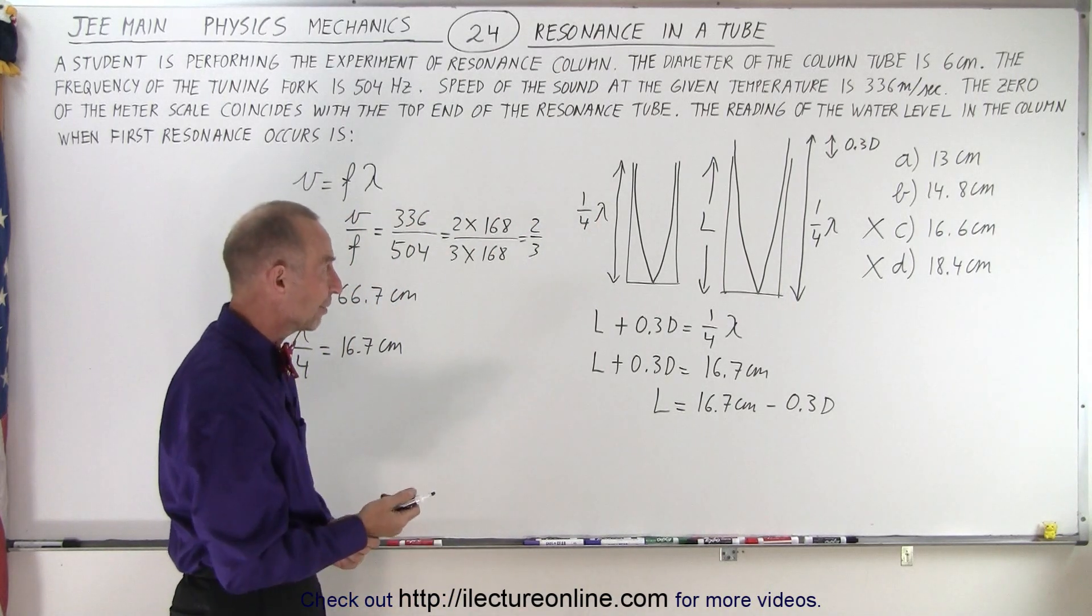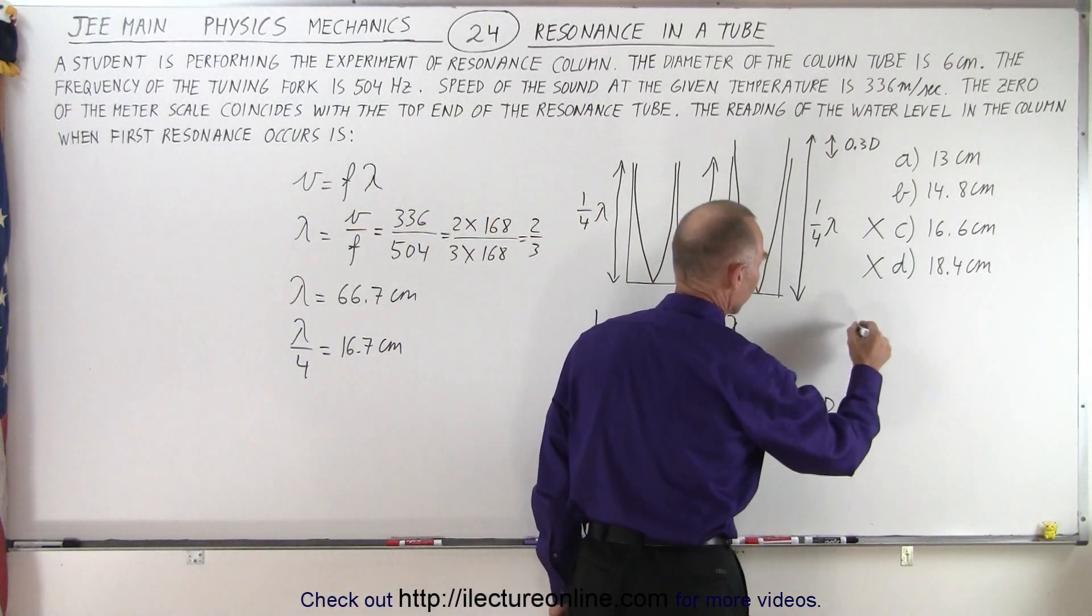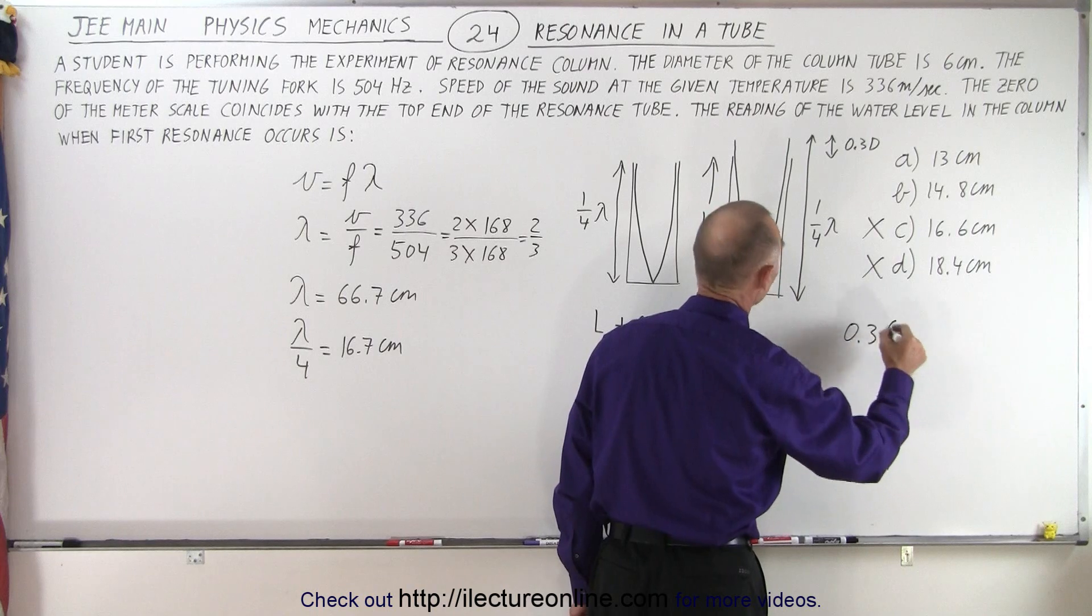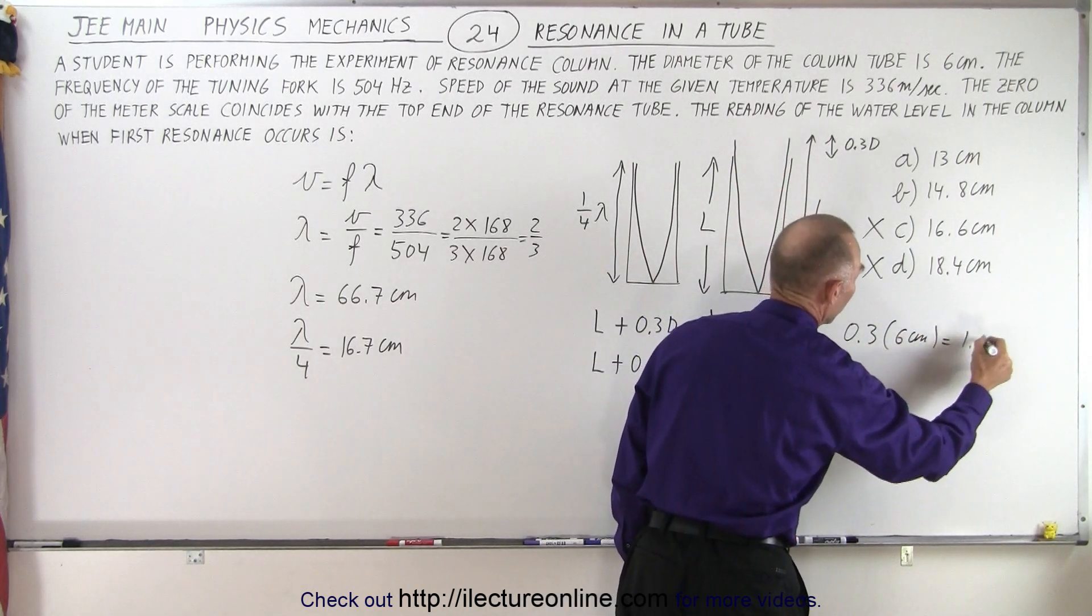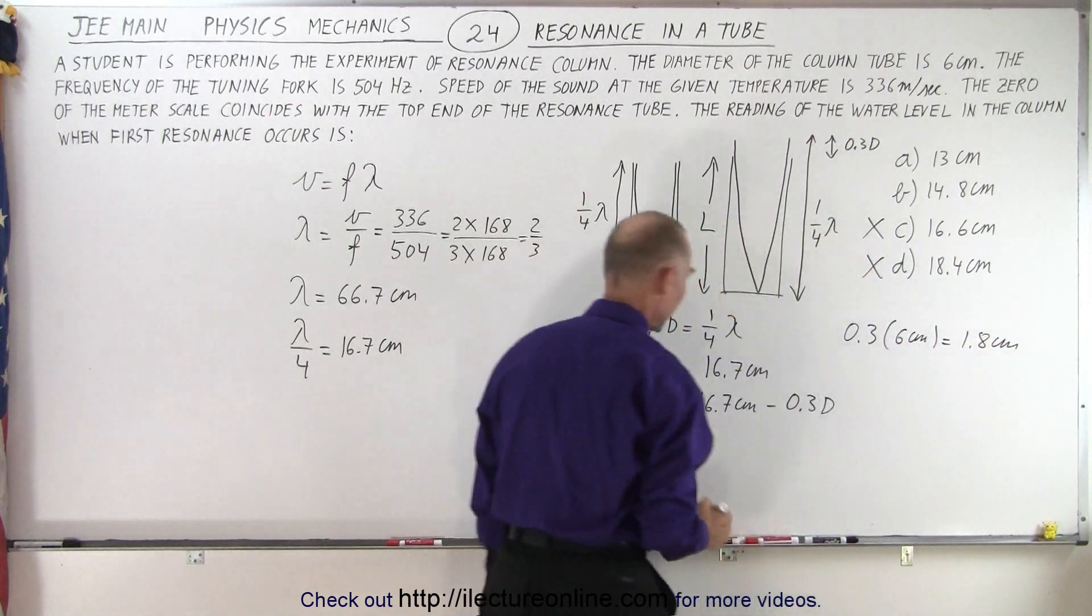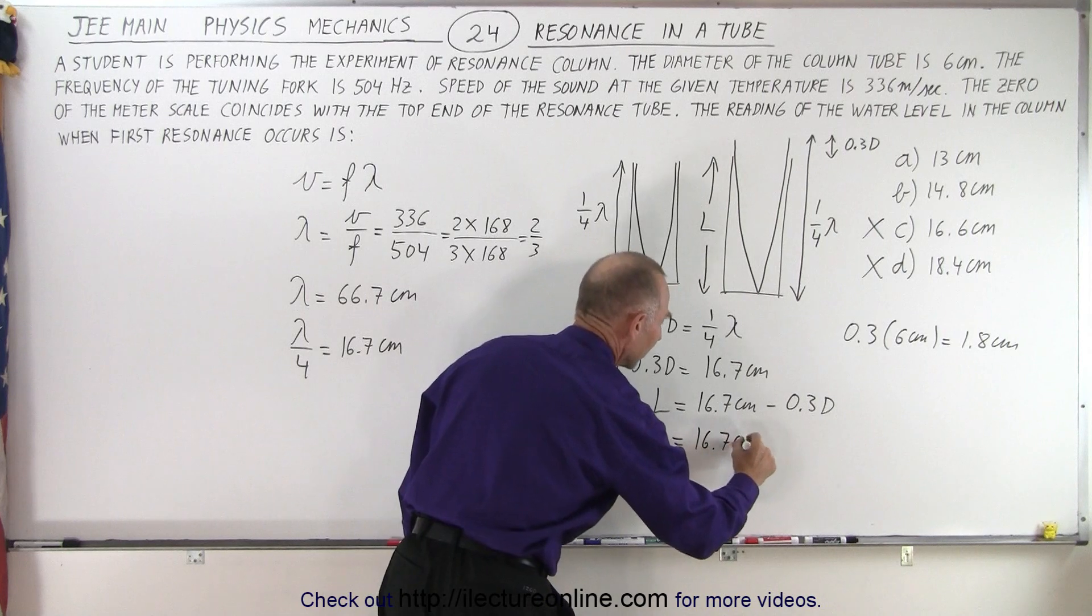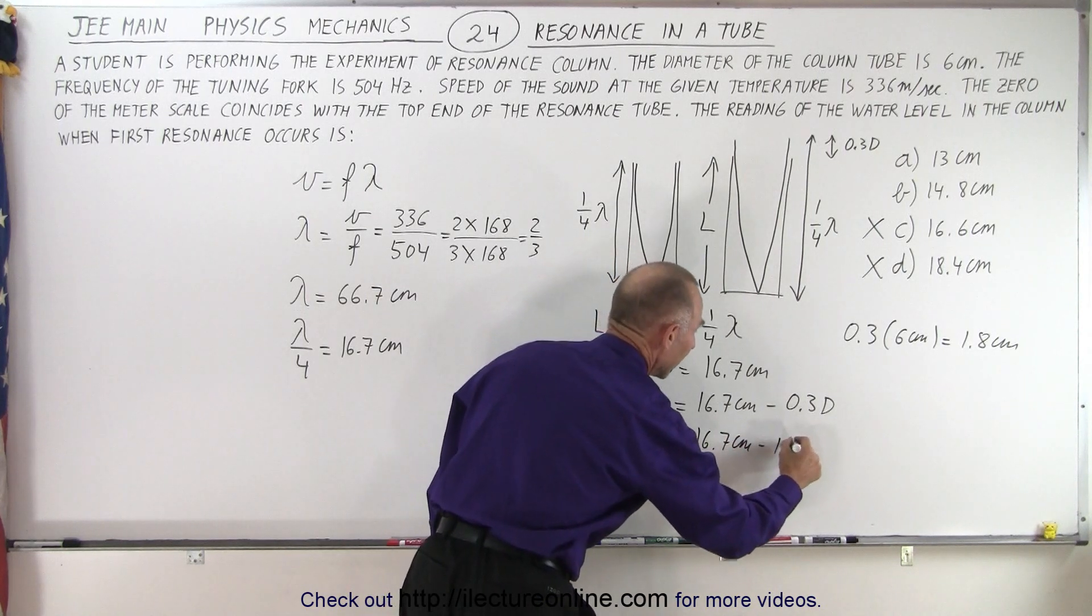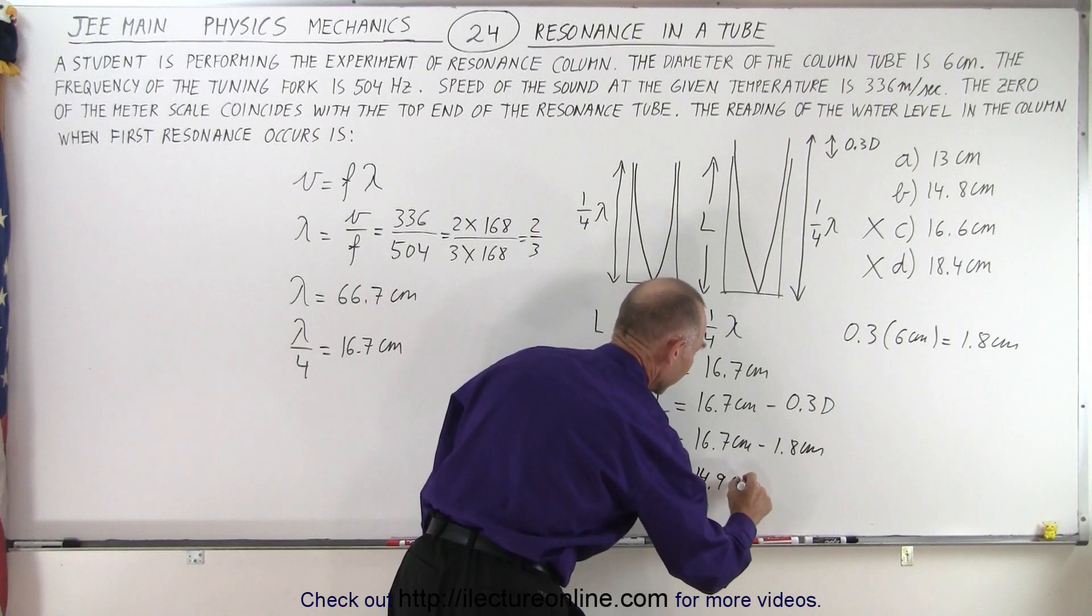So it's either A or B. We've cut it down to half of the possible answers. So let's plug in what 0.3D is. 0.3 times D, D is equal to 6 centimeters, which is 1.8 centimeters. So that means that the length of the tube is equal to 16.7 centimeters minus 1.8 centimeters, which gives us 14.9 centimeters.